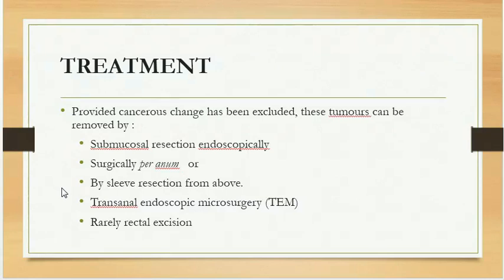Treatment of villous adenomas, provided cancerous change has been excluded: these tumours can be removed by submucosal resection endoscopically, or surgically through the perineum by sleeve resection from above. Trans-anal endoscopic microsurgery is another technique to deal with these adenomas. Rarely, the option of rectal excision is required.